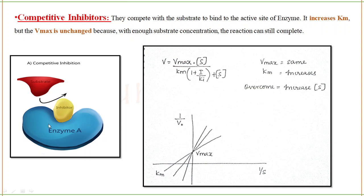The inhibitor and substrate are complementary to the active site of the enzyme, so they compete. Whichever binds first controls the enzyme. With enough substrate, Vmax is reached — same as the normal enzyme — but Km increases because the graph has varied. The equation is V = Vmax×[S] / (Km×α + [S]). In the Lineweaver-Burk plot for competitive inhibition, Vmax is the same but Km is increased. You can overcome competitive inhibition by increasing the substrate concentration.